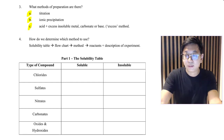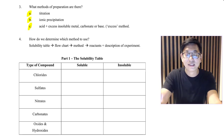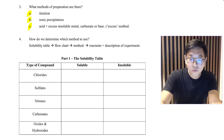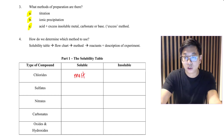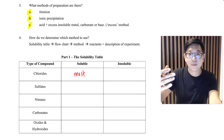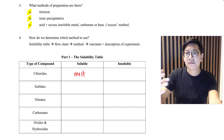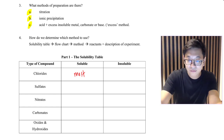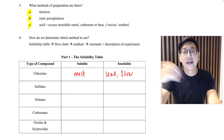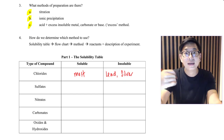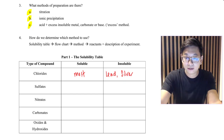Let's cover the solubility table first. There are two chlorides that are insoluble — most chlorides are soluble, but only two of them are insoluble: lead and silver. I memorize it as 'L and S' for lead and silver. So both lead chloride and silver chloride are insoluble in water.